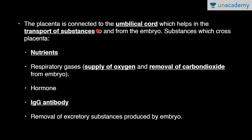The placenta is connected to the embryo through the umbilical cord, which helps in the transport of substances to and from the embryo. Substances transported include nutrients, respiratory gases such as oxygen supply and carbon dioxide removal, hormones, IgG antibody — the smallest antibody — and removal of excretory substances produced by the embryo.